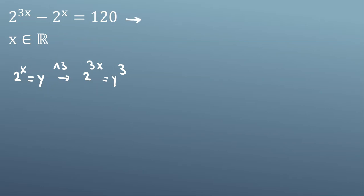If I replace here, 2^(3x) equals y^3, and 2^x equals y. Calling the original equation ① and the substitution ②, from these we conclude y^3 - y equals 120.